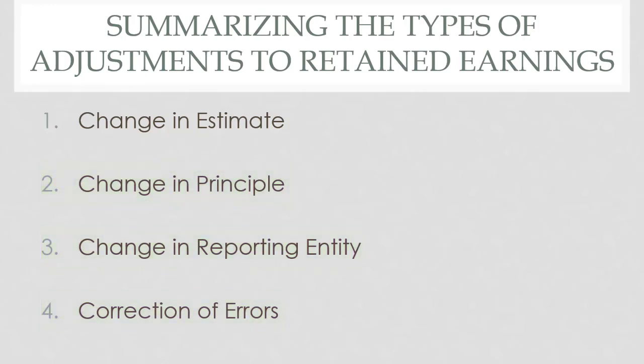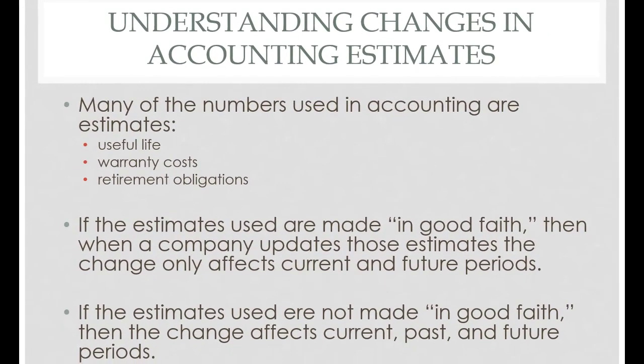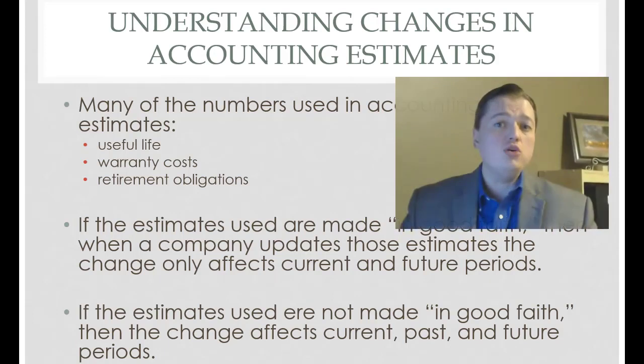As we talk about these changes we'll discuss how they change net income, how they change retained earnings, how they change the statement of retained earnings, and how they change the rest of the financial statements. We're going to start with the easiest of the four — a change in estimate — which we've already touched on in intermediate part one as part of our discussion of the income statement. Estimates are required in accounting; they're not optional.